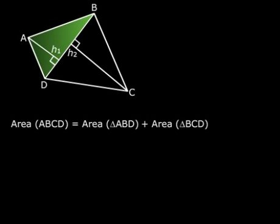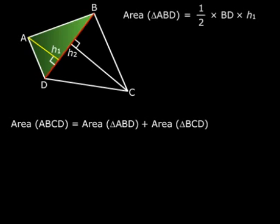So, look at triangle ABD. The base, that is BD. The corresponding altitude, that is H1. So, the area becomes half into D into H1.